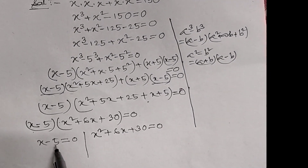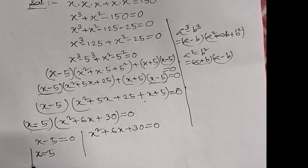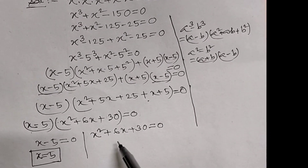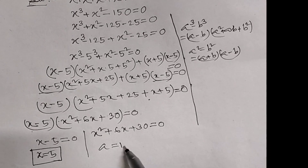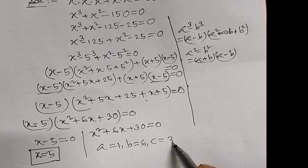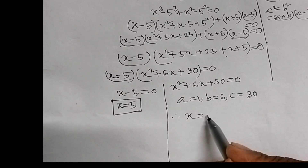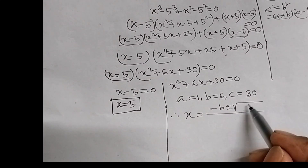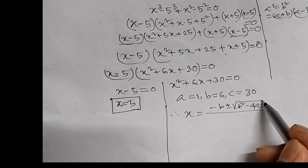From the first equation we can say x equal to 5. This is the real root of the given equation. Then from the second equation, it is of the form ax square plus bx plus c equal to 0. Therefore, a is equal to 1, b is equal to 6, c is equal to 30. So we can say x equal to minus b plus minus root over b square minus 4ac whole divided by 2a.